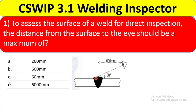The surface is here and the eye is here. The angle should be no more than 30 degrees. The distance from the eye to the surface should be a maximum of 600 mm. So the correct answer is option B, 600 mm.